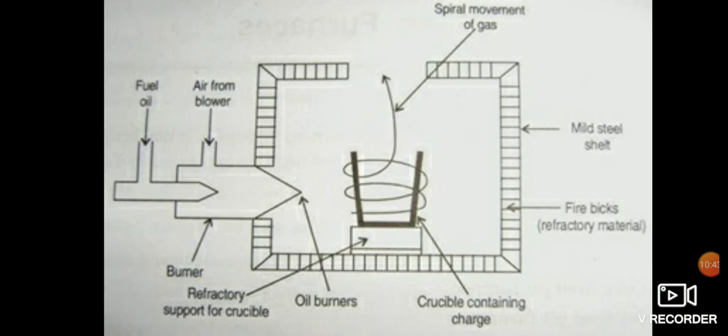In oil fired furnace, the crucible is kept on the pedestal charged with the ingots. A burner is situated at the bottom on one side. Valves are provided to control the amount of air and oil supplied to the burner, so the flames can be controlled.